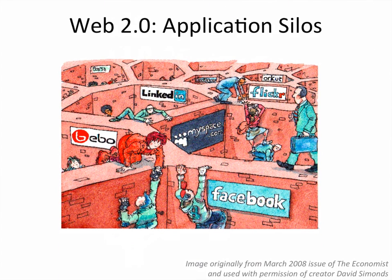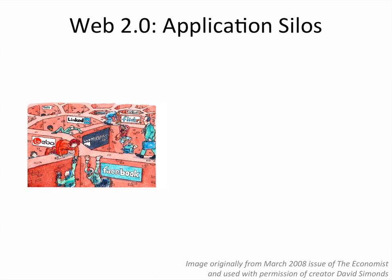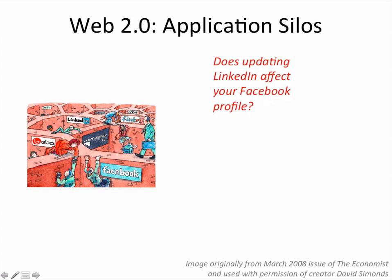Before we get to the Semantic Web, let's talk about Web 2.0. Web 1.0 was documents; Web 2.0 is applications — LinkedIn, MySpace, Yelp, Gmail, and all the things you interact with today that go beyond just storing data on computers. The big drawback to these systems is that they don't interoperate. If you update your profile on LinkedIn with a new job, Facebook doesn't automatically know about it. You have to double-enter — go to LinkedIn, enter the data, then go to Facebook and enter it there too, probably in other places as well, because they don't share information.